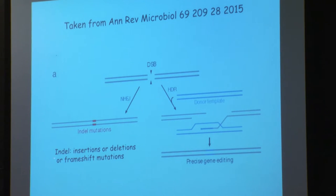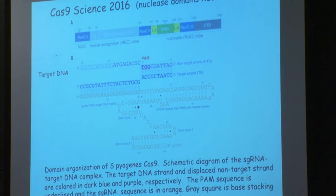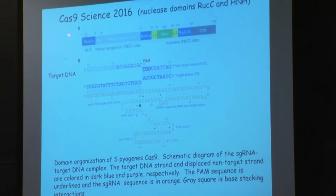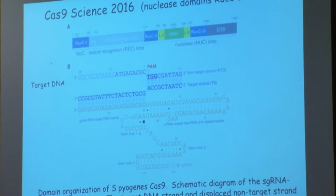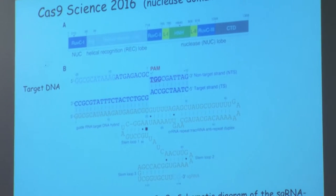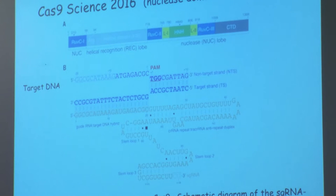Once you get the cleavage you can repair it by non-homologous end-joining, which gives you a deletion of your gene. Or if you have a template, you can use it to remake a protein with a mutation in it, or with a tag on the end so you can purify it by affinity chromatography. In almost all cells you have both mechanisms of repair, and one of the issues is how do you tweak the repair depending on what function you want the technology to perform.